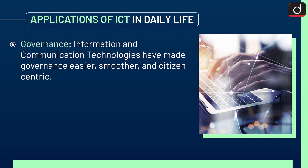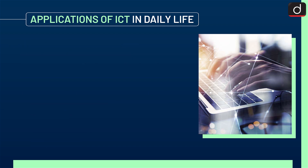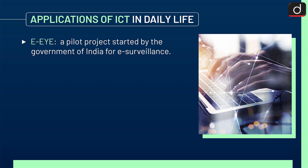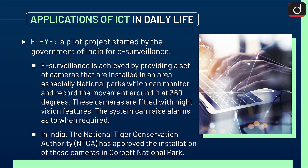Next is governance. Information and communication technologies have made governance easier, smoother and citizen-centric. Services such as online post-matric scholarships and online filing of income tax returns have been made possible through ICT. There is also a pilot project by the Government of India for e-surveillance, achieved by providing cameras installed in an area — especially national parks — which monitor and record movement at 360 degrees and are fitted with night-vision features. The system can raise alarms as required. In India, the National Tiger Conservation Authority (NTCA) has approved installation of these cameras in Corbett National Park.